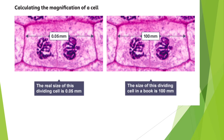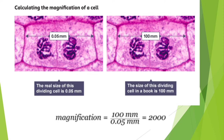Here's one more example. The actual size of a cell is 0.05 millimeters — that's the real size. The image printed on paper measures 100 millimeters. To calculate magnification: magnification equals image size divided by actual size, so 100 divided by 0.05 gives a magnification of 2000 times. Just writing 2000 is also acceptable.